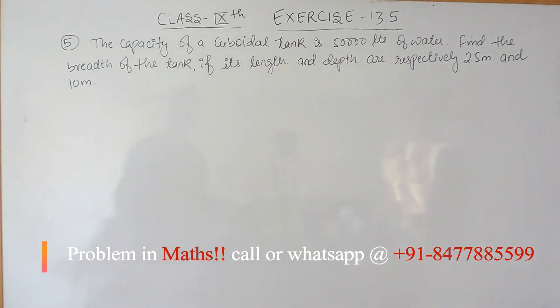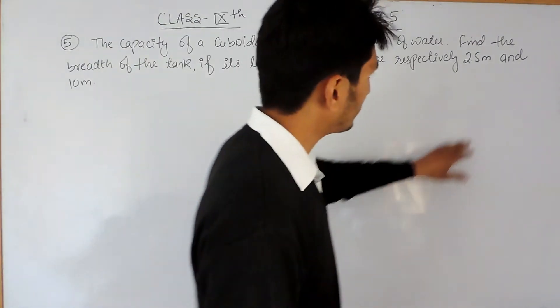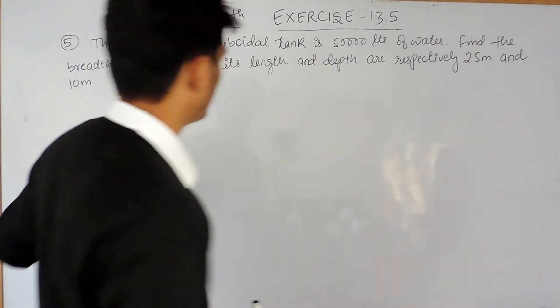the capacity of a cuboidal tank is 50,000 liters of water. Find the breadth of the tank, if its length and depth are respectively 25 meters and 10 meters. Sorry, this is 2.5 meters and 10 meters.